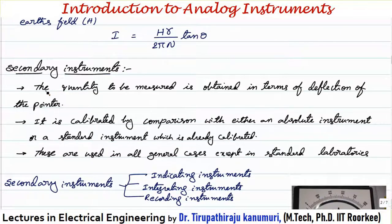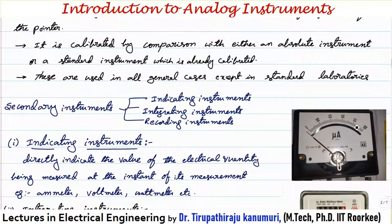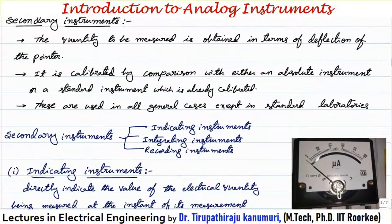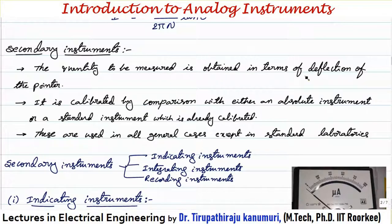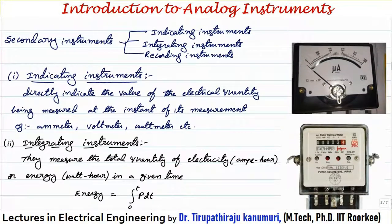In the case of the secondary instrument, the quantity to be measured is obtained directly in terms of deflection of the pointer. The pointer deflects and shows the value directly — for example, a micro ohm meter reading 200 or 600 for a double-range type. The value of current in amperes is mentioned directly. Calibration is done by comparison either with an absolute instrument or a standard instrument already calibrated. Secondary instruments are used in all general-purpose applications except standard laboratories requiring very high accuracy.